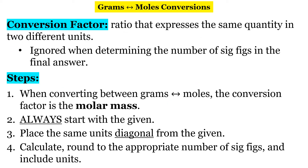A conversion factor is a ratio or a fraction that expresses the same quantity in two different units. We ignore conversion factors when we determine significant figures — that was one of the first rules from sig figs. Here are the steps we're going to write down.